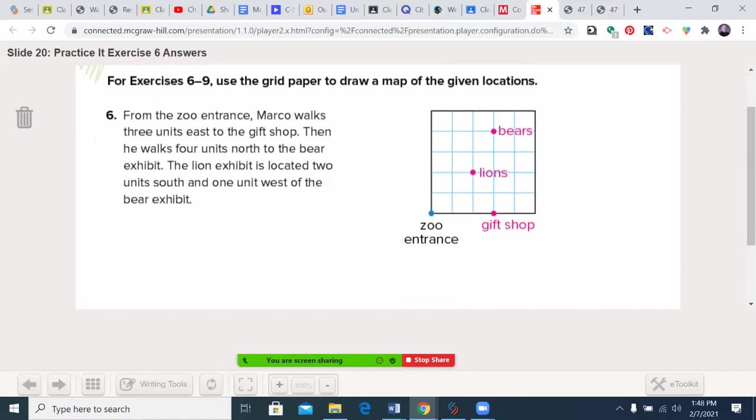From the zoo entrance, Marco walks three units east to the gift shop—you see that there. Then he walks four units north to the bears. The lion exhibit is located two south, one, two, and one east of the bear exhibit.